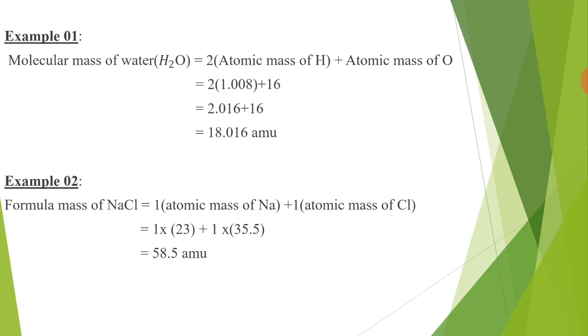Sodium chloride contains one atom of sodium and one atom of chlorine. Multiply the atomic mass of sodium (23) and chlorine (35.5) with the number of atoms, and then add the masses. So we get the formula mass of sodium chloride, that is 58.5 amu.